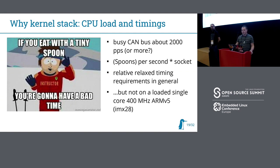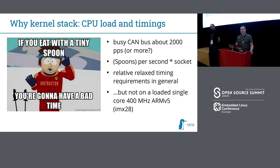What kind of challenges do we have with this protocol? Usually on the CAN bus we work with about 2,000 packages per second — not really a huge amount of data for a normal high-power system. These packages are tiny, really small, so with SKBs we have a huge overhead for each package.